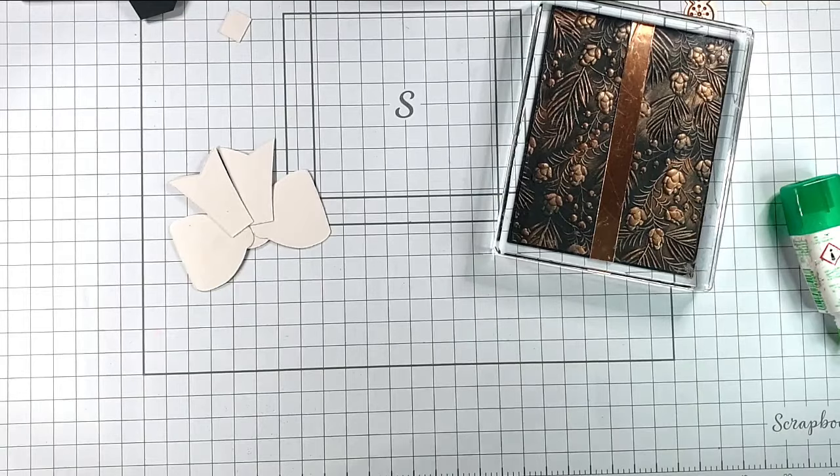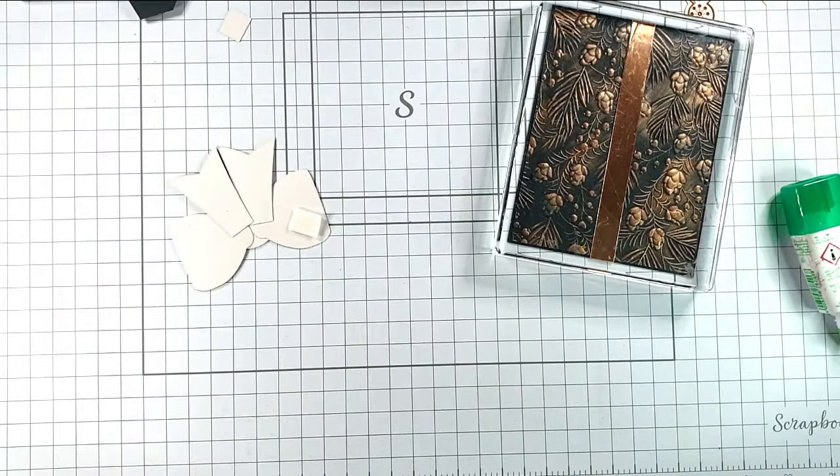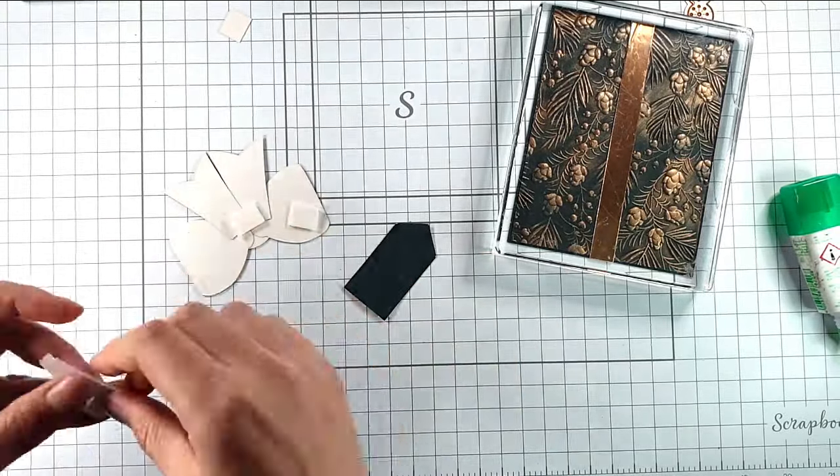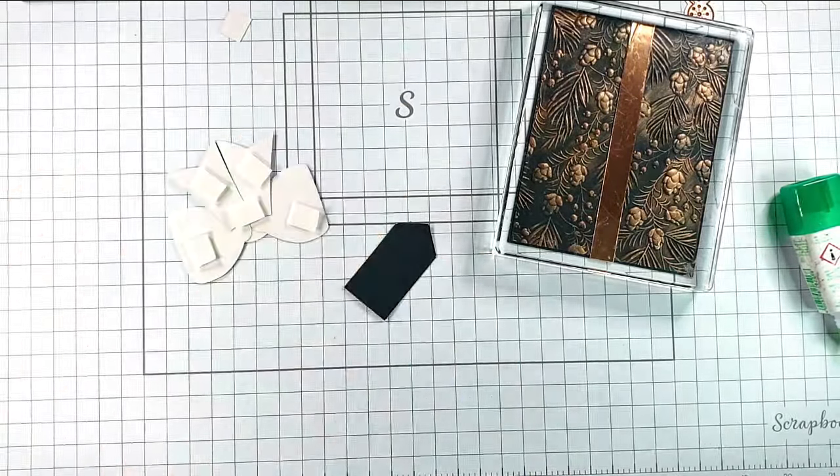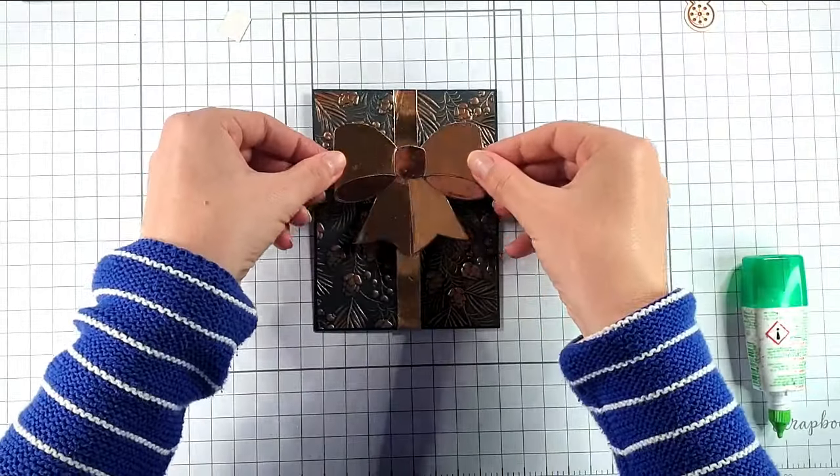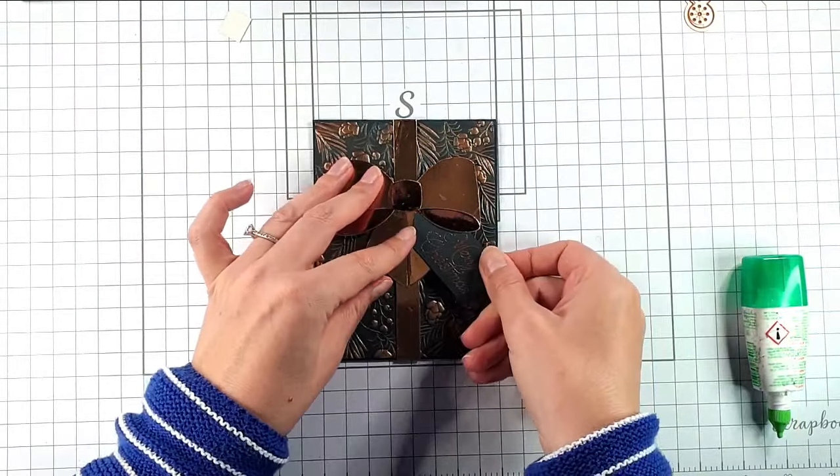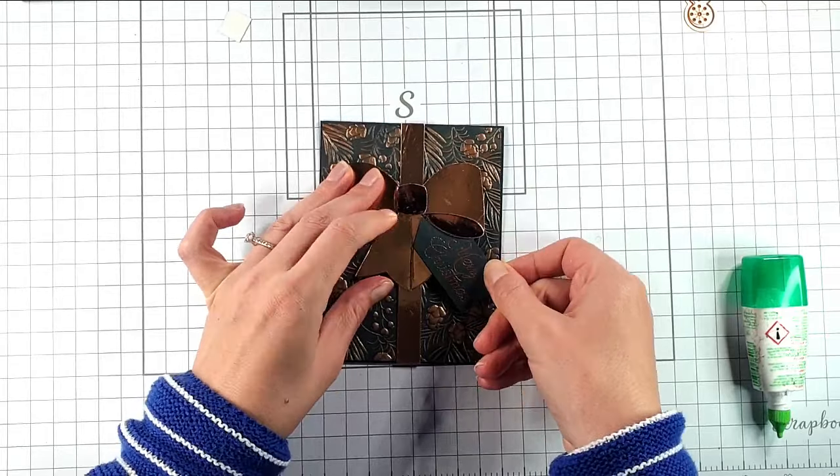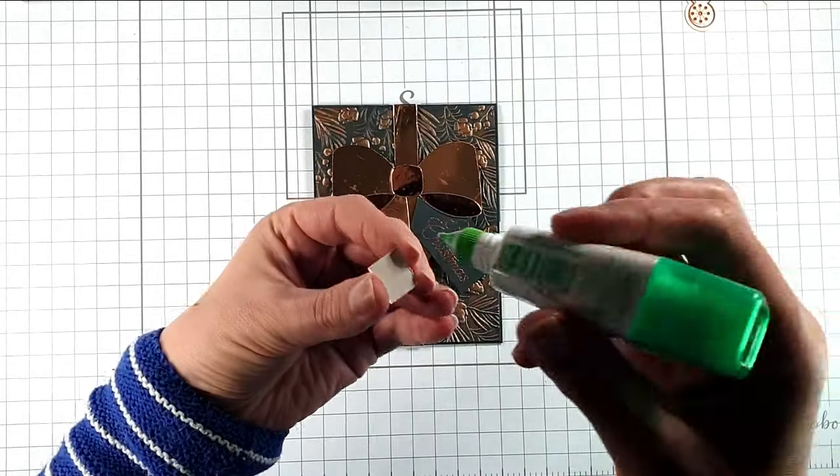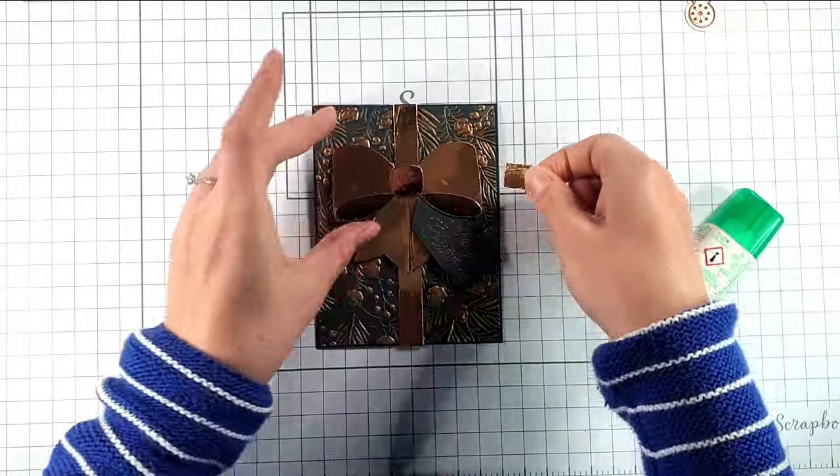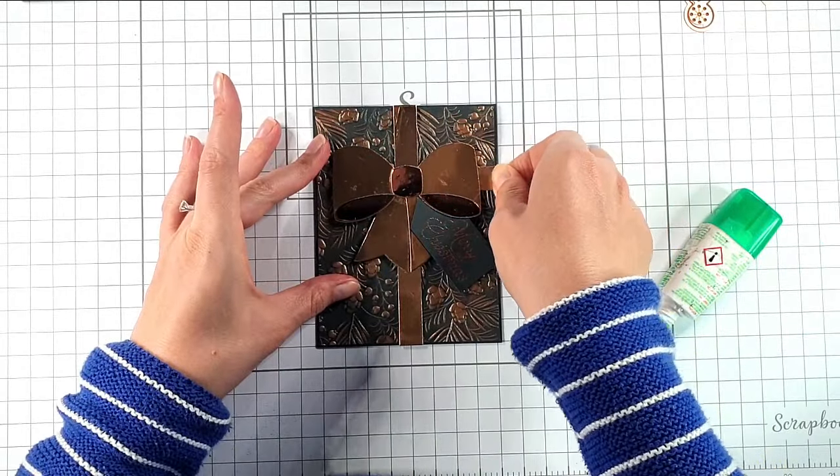Now I'm going to pop the bow up on some foam pads, and I'm going to do the same with the tag as well. So then I'm going to add this onto here, and then I'll add this on like this. And then I'll add these smaller pieces either side as well. Those are just the pieces that kind of finish off that crossover ribbon.